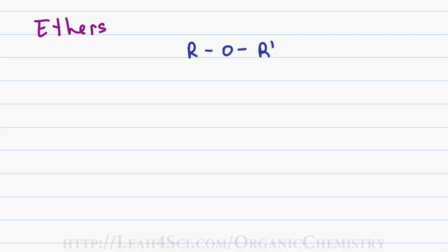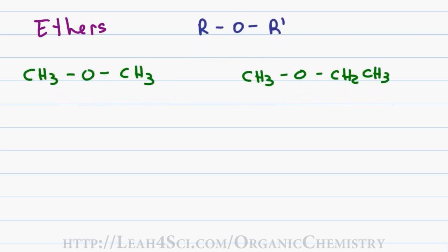For example, we can have an ether created by connecting two methyl groups to an oxygen or creating both a methyl and an ethyl group to an oxygen. There are two common ways to name ethers.